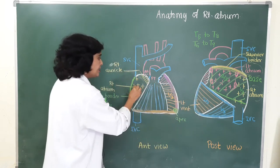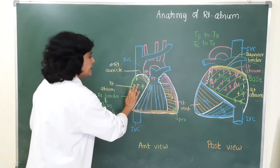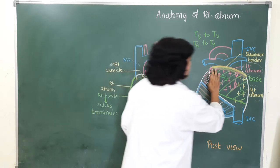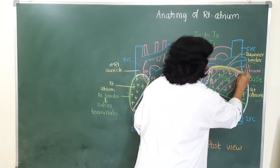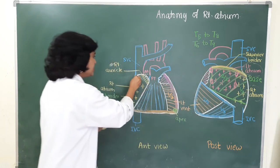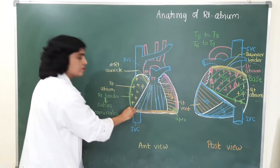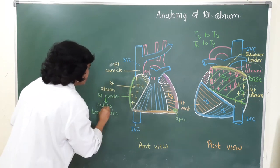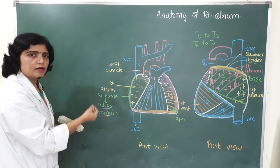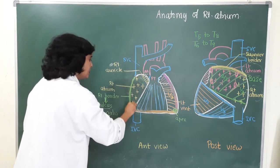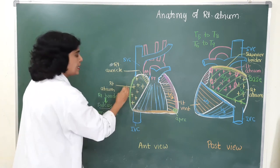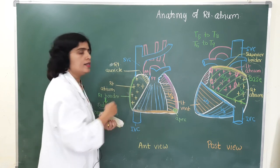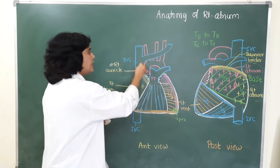The right atrium contributes to the formation of the sternocostal surface, the base of the heart, and even the upper border of the heart. It forms the whole of the right border of the heart. This right border coincides with the sulcus terminalis, a groove present on the outer surface of the heart.